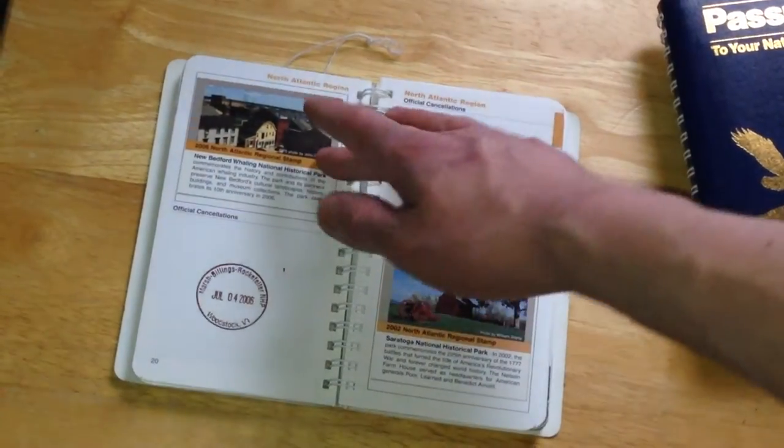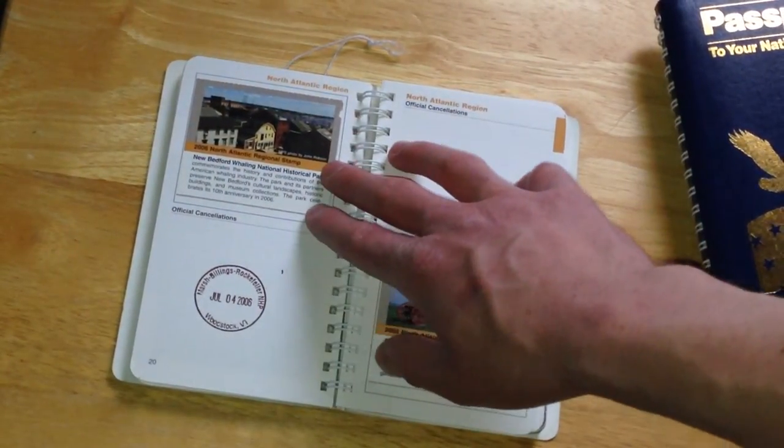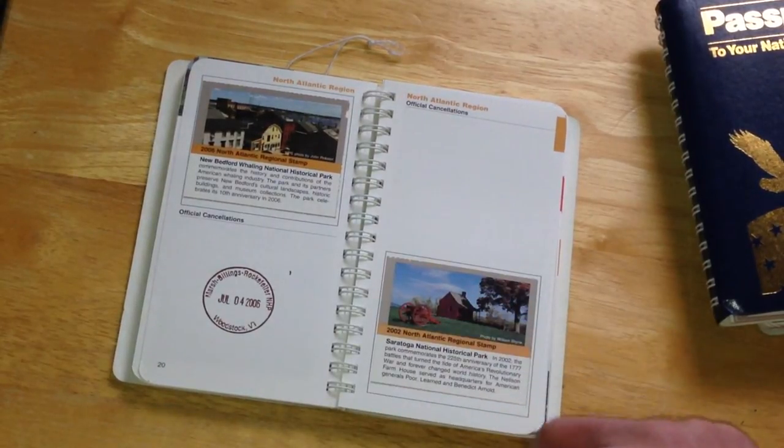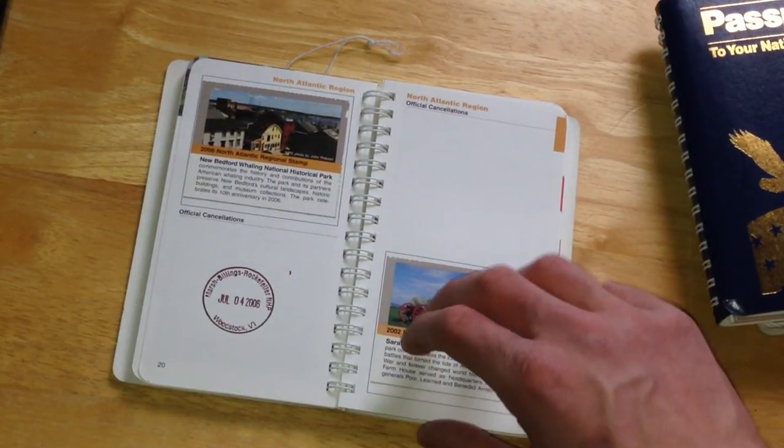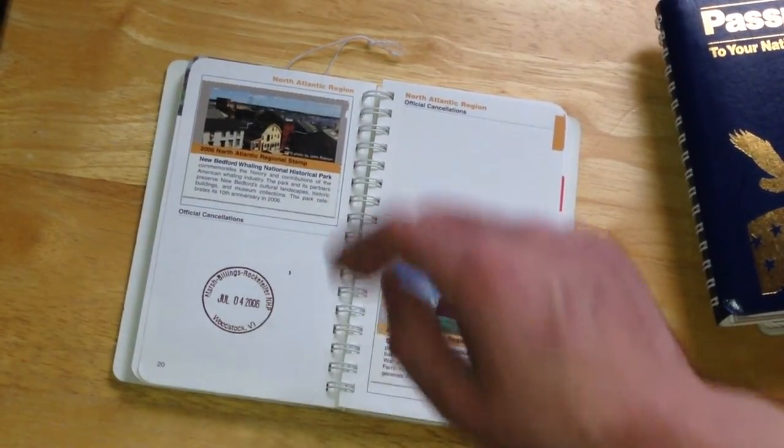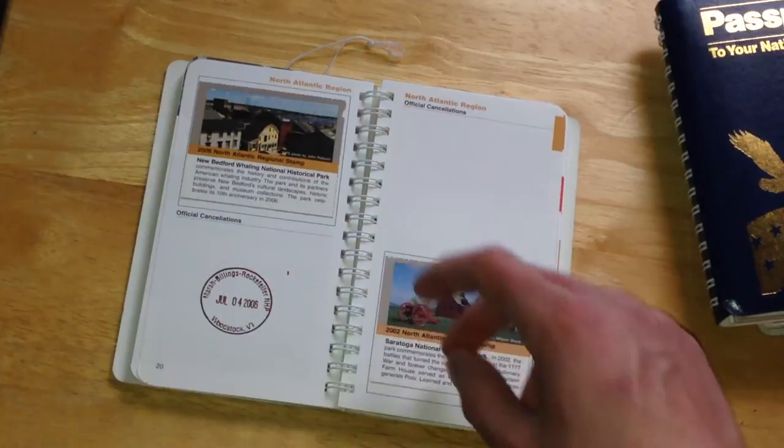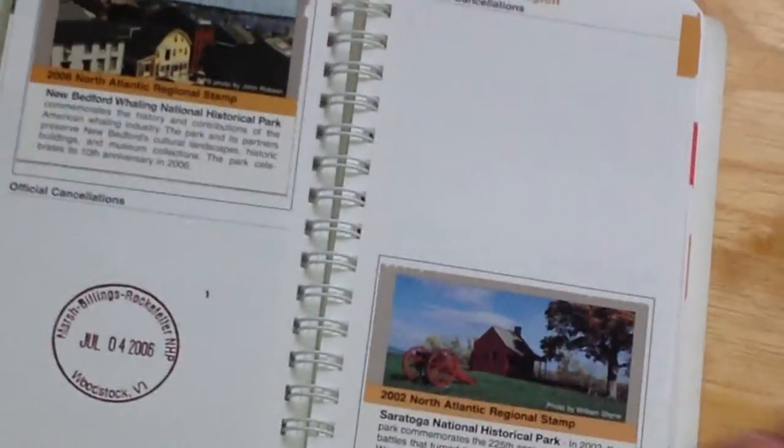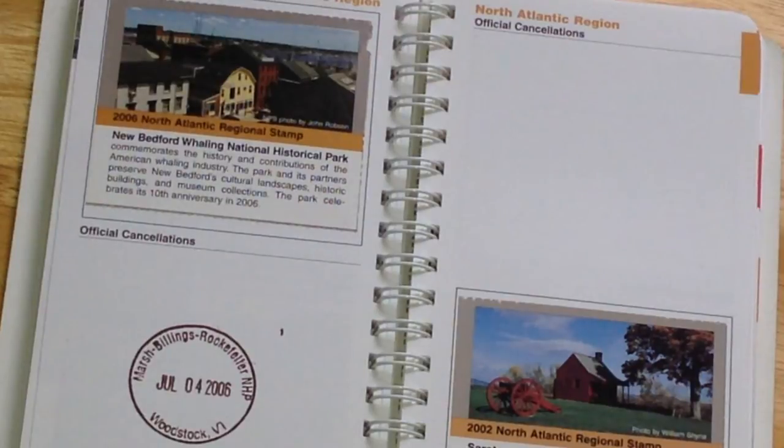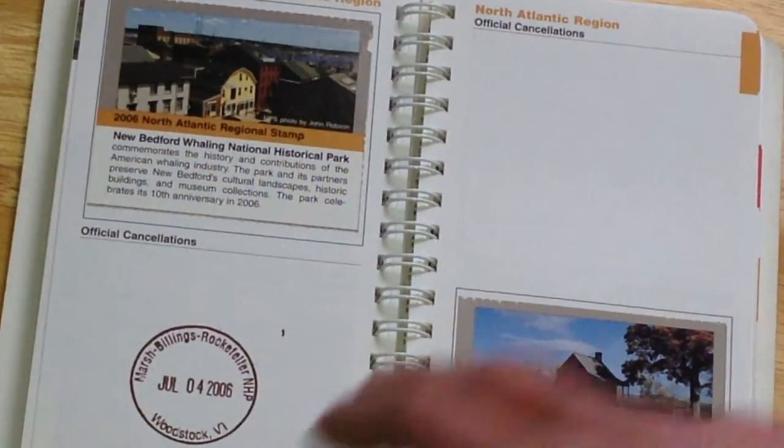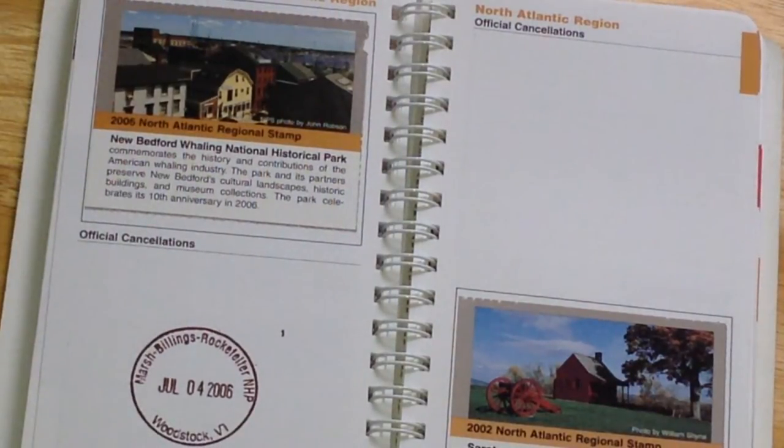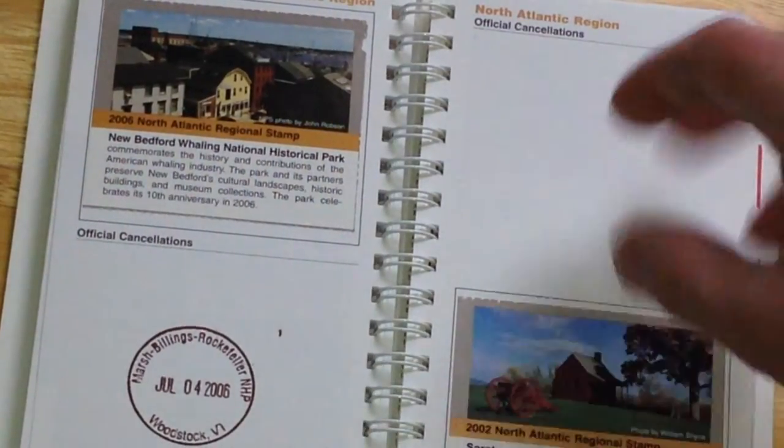So again another one I've been to that I actually have the stamp for. It's from 2006, a North Atlantic regional stamp. I actually do have the stamp somewhere else though. But the actual cancellation is in this book, which is the Marsh Billings Rockefeller National Historic Park, July 4th 2006, Woodstock Vermont.